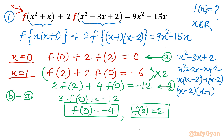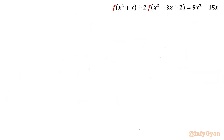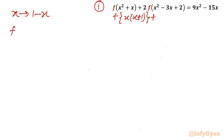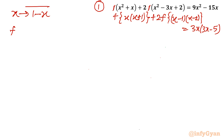These values are for verification of our f(x) result. Now let's execute one operation — I will replace x with 1 minus x. Let me write the equation in the form: first x(x+1) plus 2 times f of the factorization form (x-1)(x-2). The right hand side, if we take 3x common, gives 3x(3x-5). Let's perform this substitution and see what comes out.